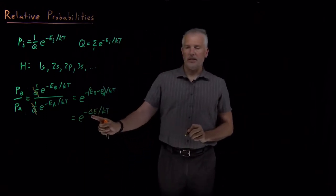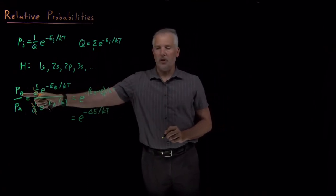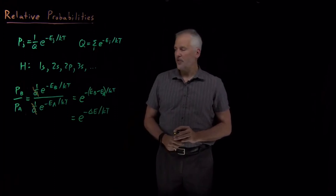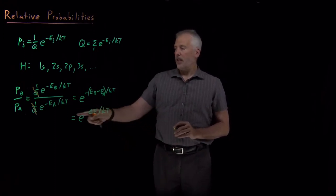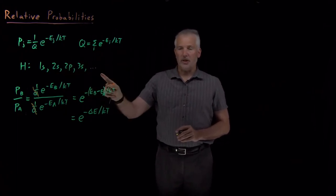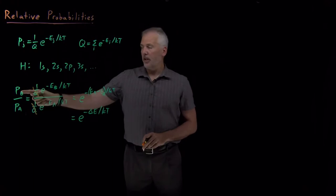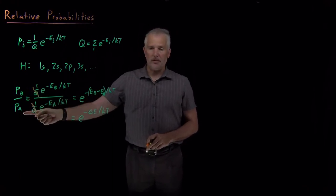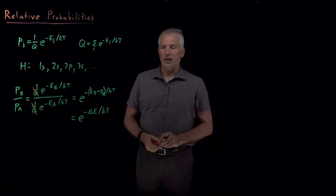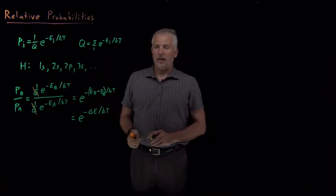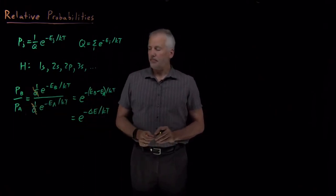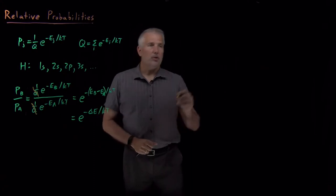That ratio of two exponentials equals e to the minus delta E over kT, where delta E is the energy of the state in the numerator minus the energy of the state in the denominator. We've gotten rid of Q — we don't need to complete the infinite sum or know all the energies. To calculate the relative probability of state B relative to state A, we only need to know the energies of those two specific states. That's an important result we'll use frequently.